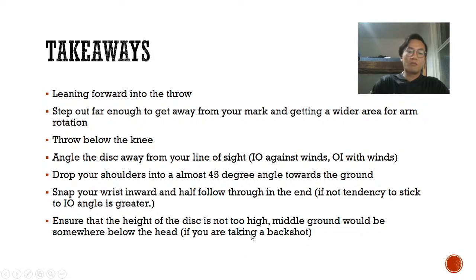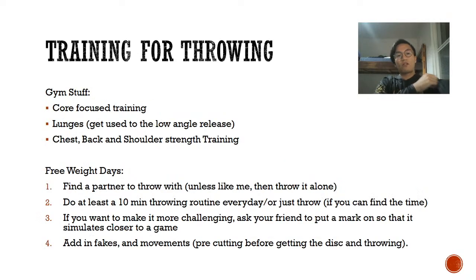Ensure the height of the disc is not too high. Middle ground will be somewhere below the head, around the shoulders. If you're taking a back shot of your video, you'll see if you're going up too high again. You don't want a 50-50 disc. Training for throwing: core focused training, lunges to get used to the low angle release, that big lunge, that step away from the mark. Basically chest, back and shoulder strength training. That's the gym stuff.